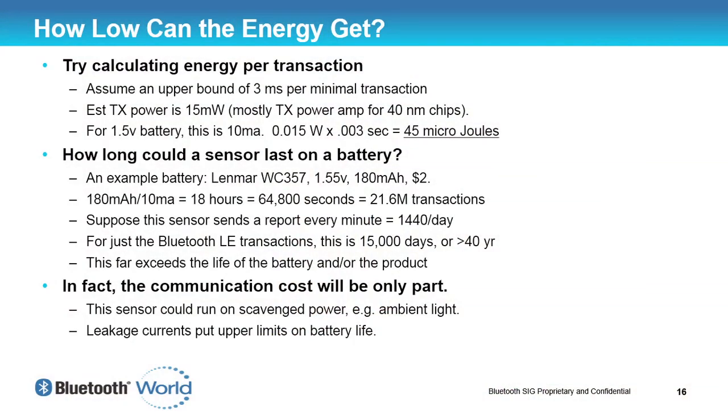What does that actually mean in terms of battery life? Let's take an example battery: a 1.5 volt battery with 180 milliamp hours — a battery that costs two dollars retail, not in units of a million. We've got 180 milliamp hours divided by 10 milliamps, so that's 18 hours of time. In 64,800 seconds we can do approximately 21.6 million transactions. So we can open and close that window 21.6 million times before the battery runs out.